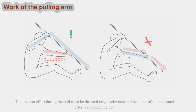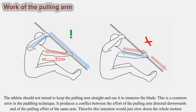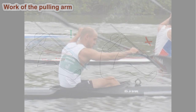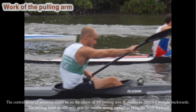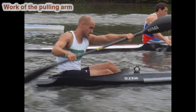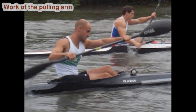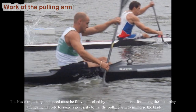The traction effort during the pull must be directed only backwards and be part of the rotational effort advancing the boat. The athlete should not intend to keep the pulling arm straight and use it to immerse the blade — this is a common error, producing a conflict between the downward effort and the pulling effort of the same arm. The central point of attention should be on the elbow of the pulling arm, directed straight backwards. The pulling hand should only grip the paddle strongly enough to bring the body forward. The biceps takes an important part of this effort, and the triceps should let the arm bend progressively during the stroke. The blade trajectory and speed must be fully controlled by the top hand.